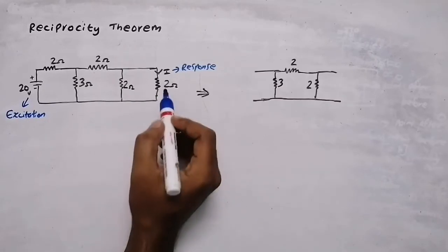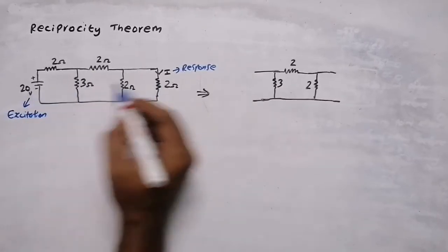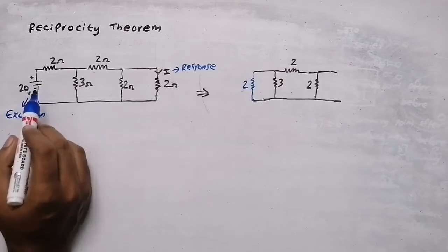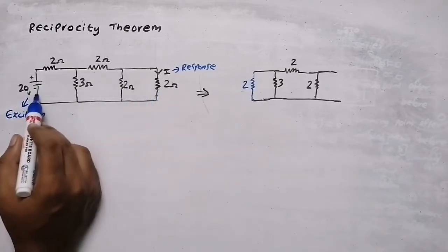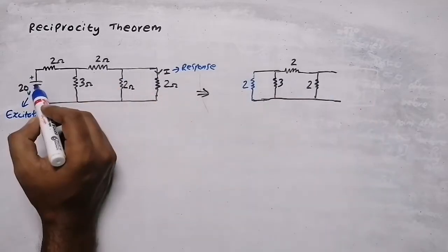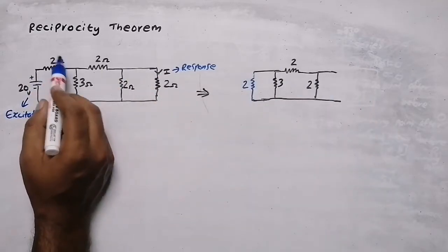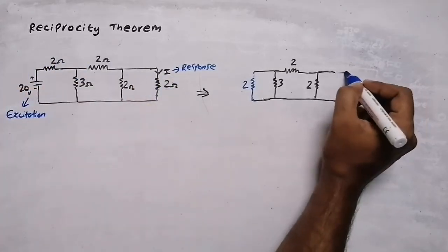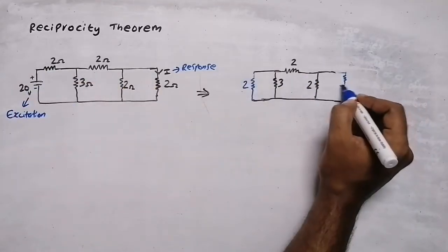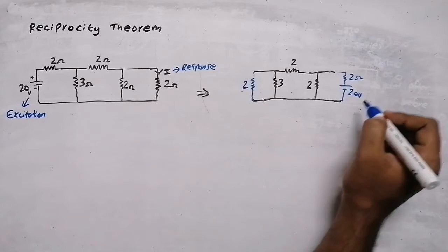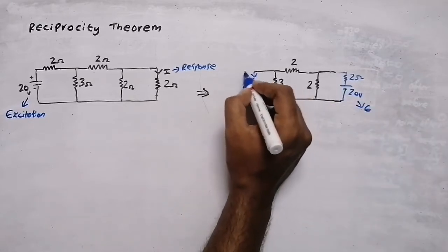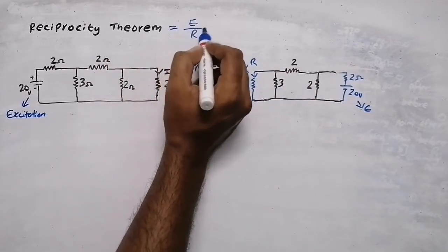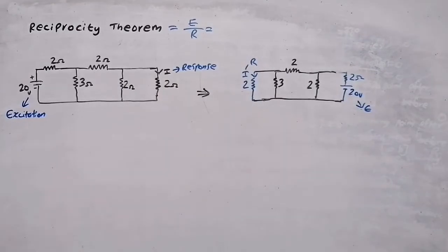For the same network, I am going to place this 2Ω resistor here and change my excitation — placing this 20V voltage source on the other side. Since the 20V source is in series with the resistor, I need to take the whole branch and shift this excitation to this side: 2Ω resistor and 20V voltage source. Now this is my excitation, and the current flowing through the 2Ω resistor will be my response. According to the reciprocity theorem, the ratio of excitation to response should be the same.